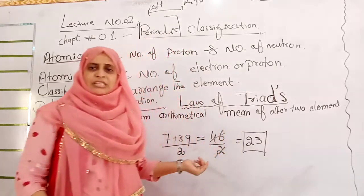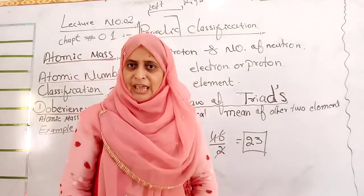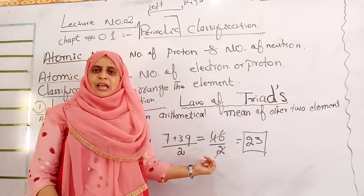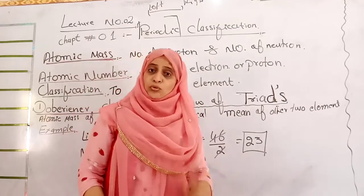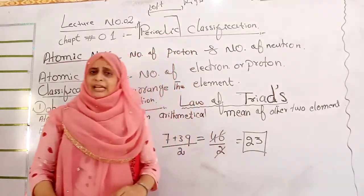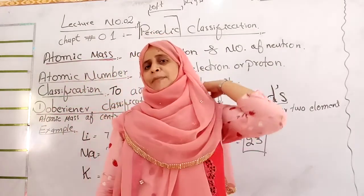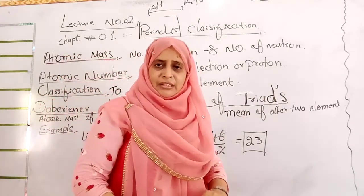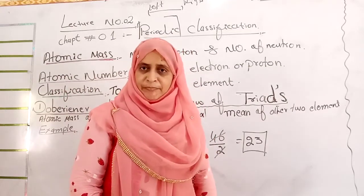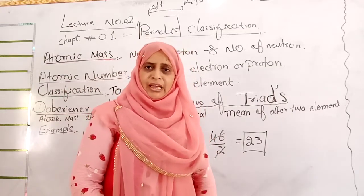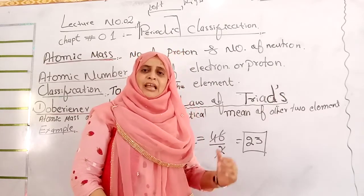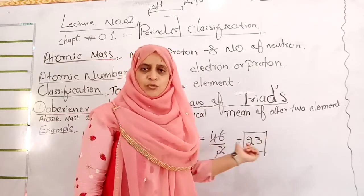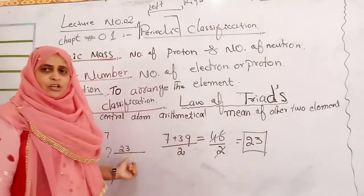The first element is lithium, with atomic mass of 7. The second element is sodium. To determine the atomic mass of sodium, we use the atomic mass of potassium, which is 39. The atomic mass of the first element plus the atomic mass of the third element, divided by two, gives the mathematical mean — which is 23. So the atomic mass of sodium is 23.